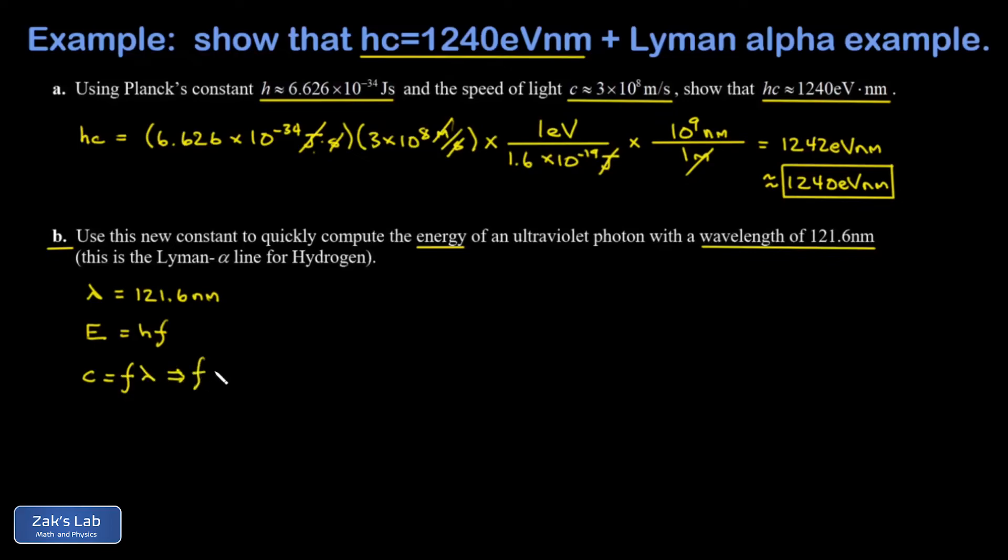That means f can be written as c over lambda. And look what happens. My energy formula is actually hc over lambda. So there's that product, hc.